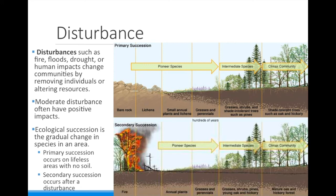Primary succession occurs on lifeless, bare rock that does not have any soil. An example of this would be a lava flow that turns into an island. Pioneer species, such as lichens, begin by breaking down the rocks into soil. Once the soil is present, succession can continue, like in secondary succession, with small grasses, smaller shrubs and plants, and then eventually trees.